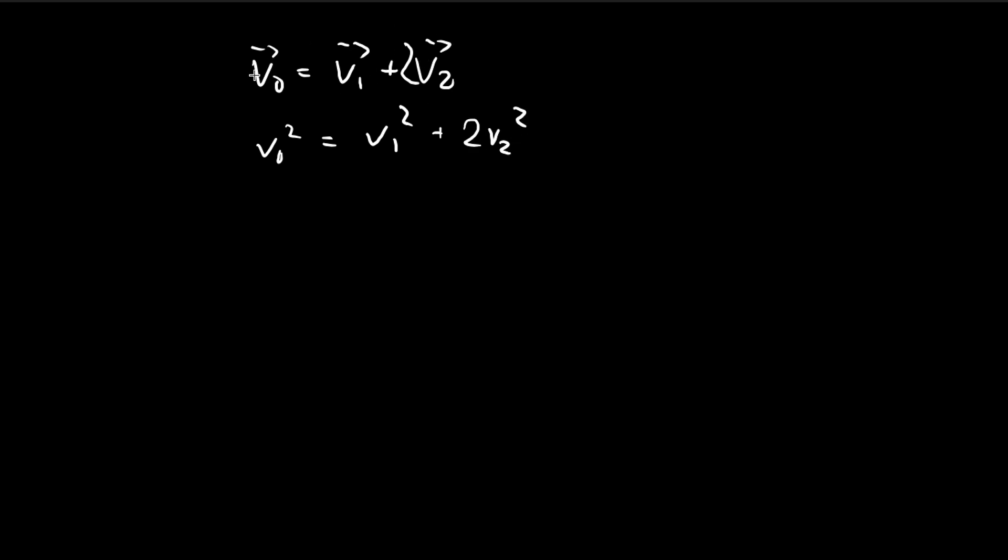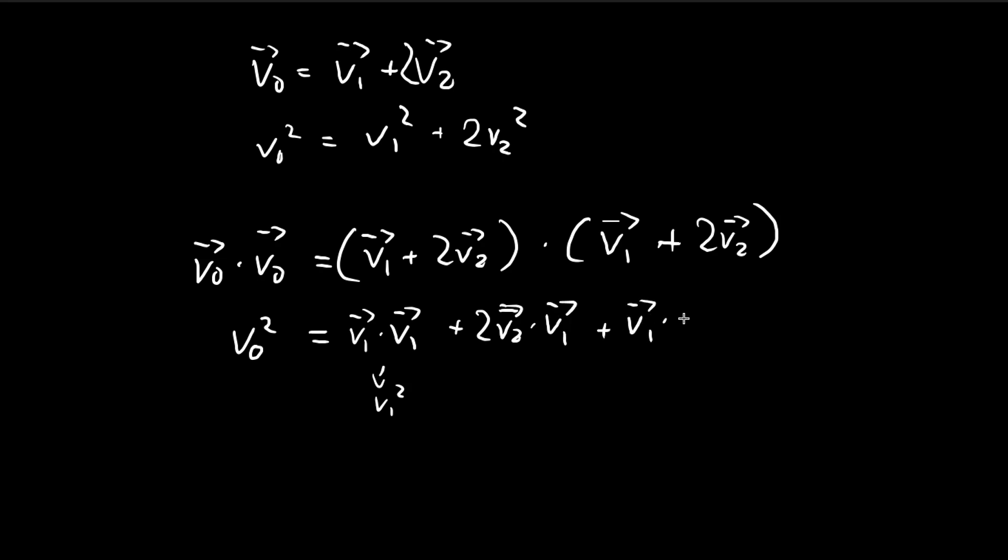Now I'm going to take the square of both sides of the top equation. When I'm taking the square, that means I'm taking the expression and taking the dot product of that expression with itself. On the left-hand side, it's just v0 squared. Then we have v1 dot v1, which is just v1 squared, plus 2v2 dot v1, plus v1 dot 2v2, plus 2v2s that are going to dot each other.